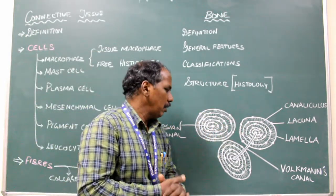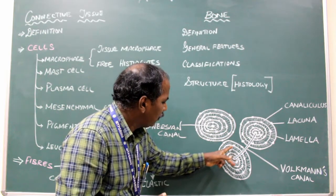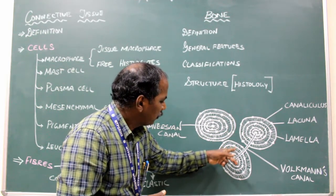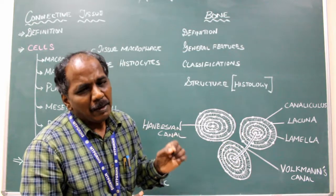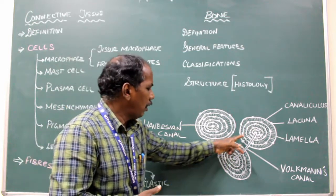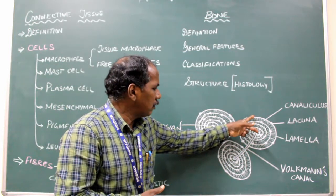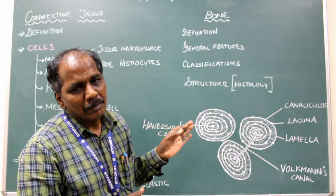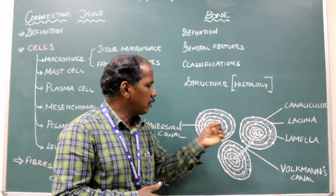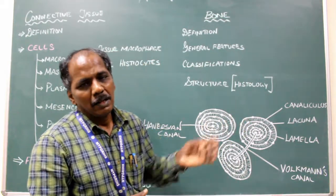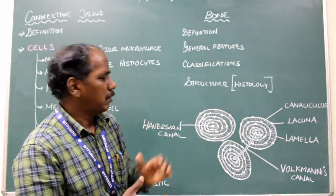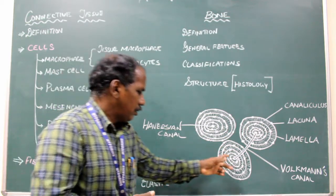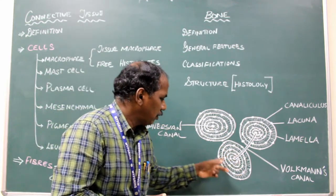The lacunae are connected to each other by canaliculi. One lacuna is connected to another lacuna by canaliculi. These are the lifelines of the bone because it is through which the nutrition is going or taking place. And central canal...